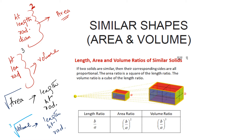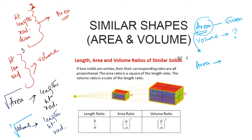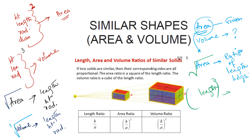The last thing: if area is given to us and we want to find the volume of any unknown figure, first convert the area — from the area, find the ratio of the lengths or height by taking the square root of the area. After that, from that length or height, take the cube to find the volume.